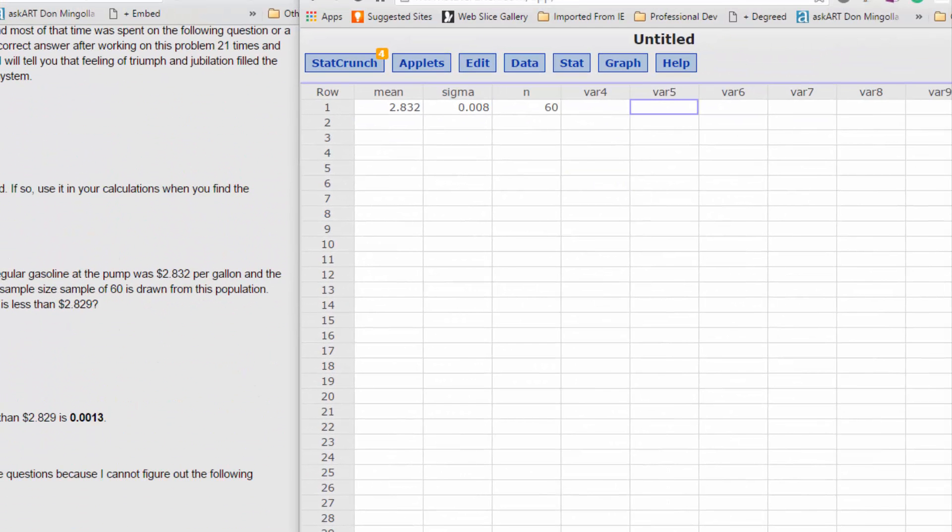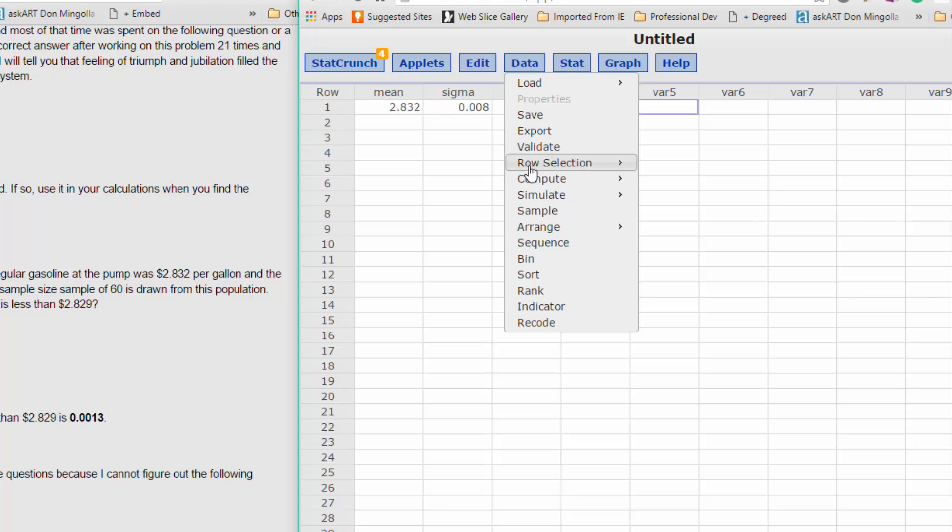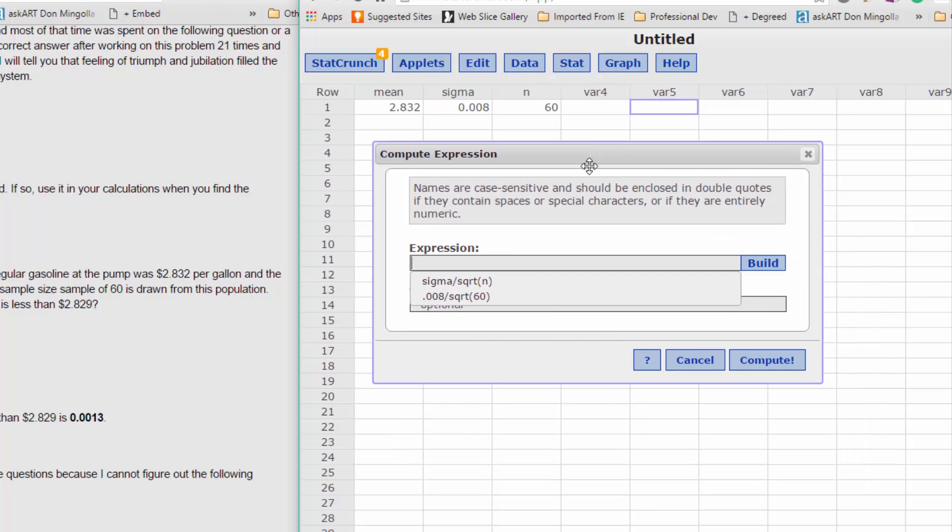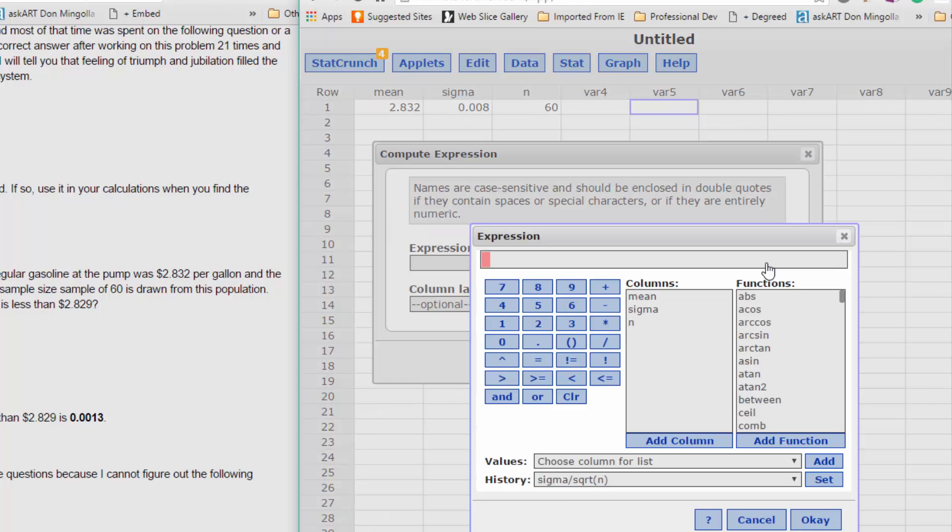Now you can solve for sigma sub x bar using your TI calculator or Excel if you're using that. I'm just going to show you how to do it using StatCrunch for everything. I took just a few moments to put in my mean of the population $2.83, the sigma of the population 0.008, and the sample size n of 60. To calculate sigma sub x bar, I'm going to go to data, compute, expression, brings up the expression builder, and I just click on build to let it help me work through this.